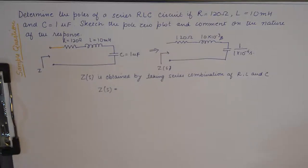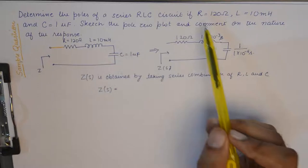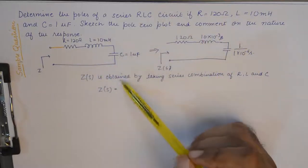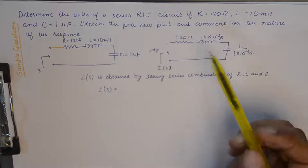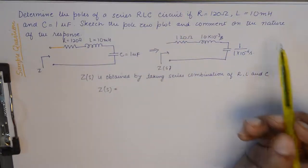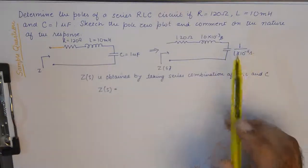So a sample question for that would look something like this. In this question, a series RLC circuit with the values of R, L, and C are given, and we need to sketch the pole zero plot and then we need to comment on the nature of the response. Now commenting on the nature of the response means commenting on the stability of the system or the network.